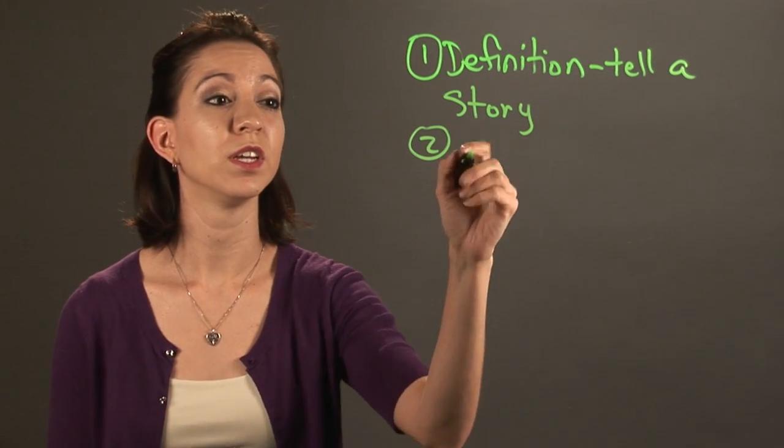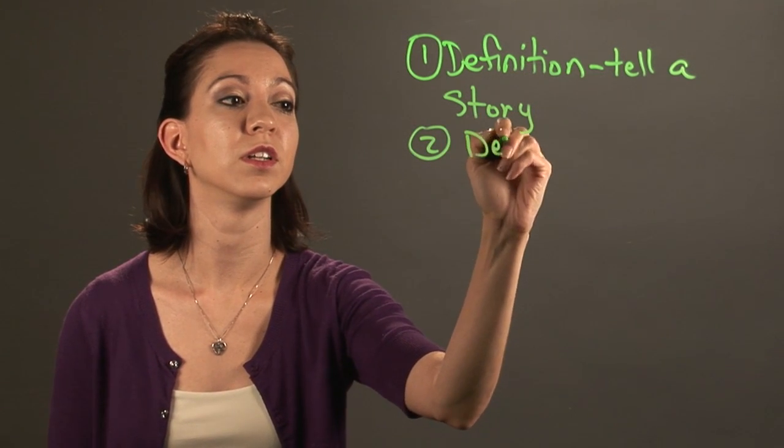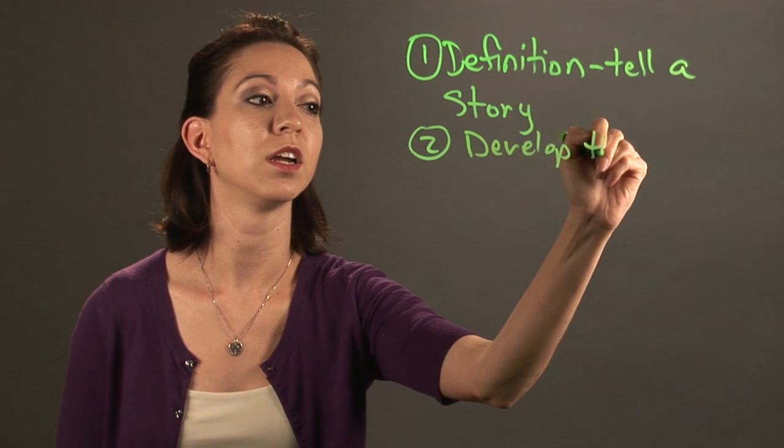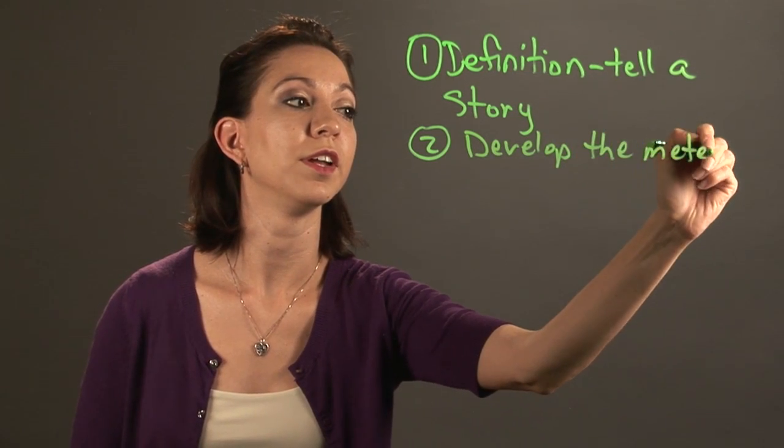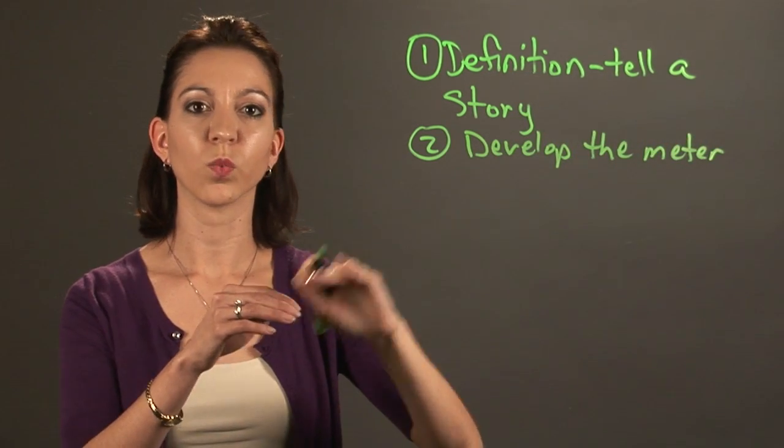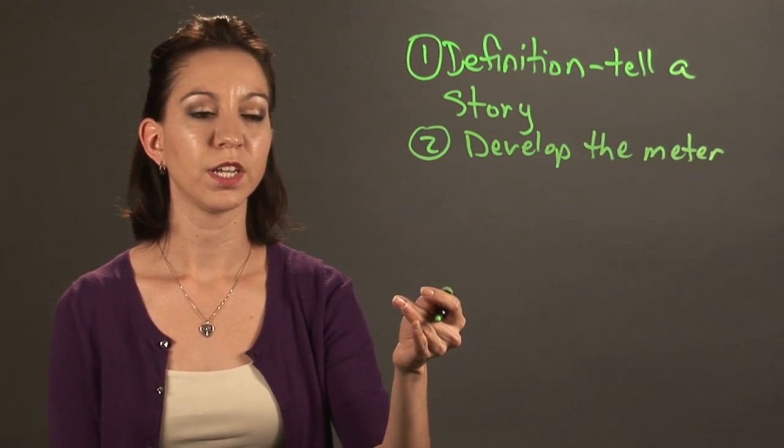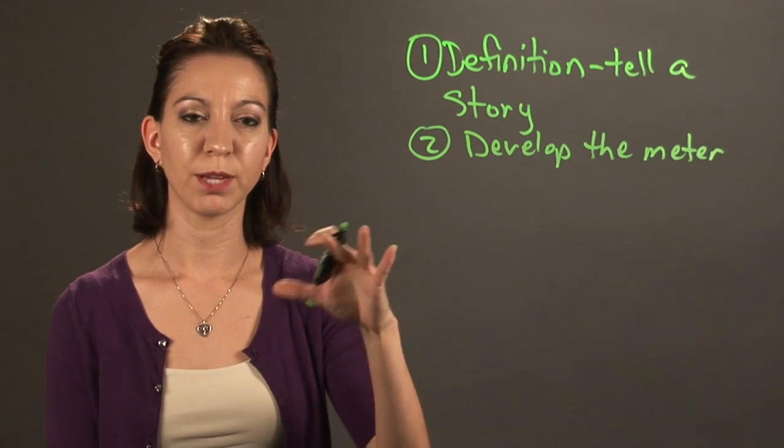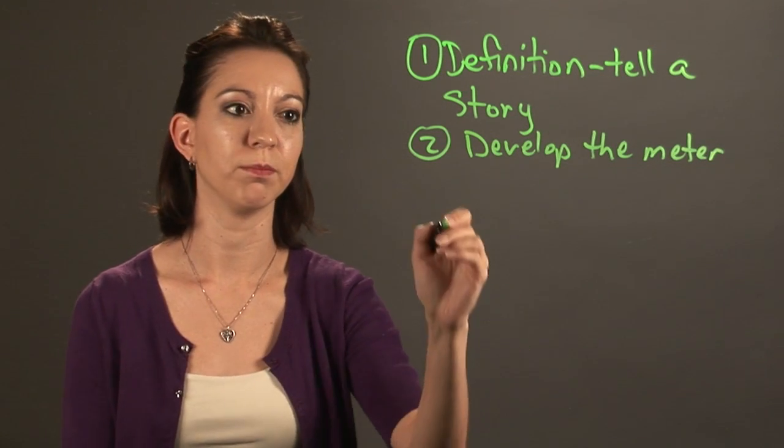The second thing you want to do is to develop the meter. Now the meter a lot of times is the rhythm of the piece. Establish that in your head and you'll be able to have a more flowing poem by the end of it.